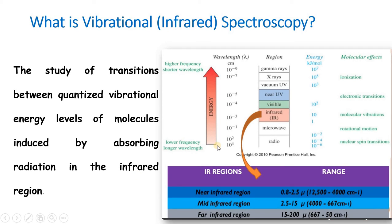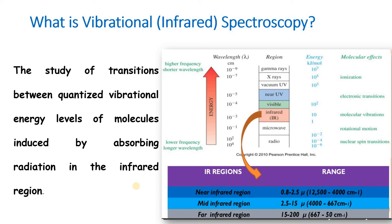This figure shows the different regions of the electromagnetic spectrum. The infrared region is subdivided into three regions: the far infrared region, which spans from 50 to 667 cm⁻¹; the mid-infrared region, which ranges from 667 to 4000 cm⁻¹; and the near-infrared region, which ranges from 4000 to 12500 cm⁻¹. So vibrational spectroscopy involves the study of transitions between vibrational energy levels of molecules by absorbing radiation in the infrared region.